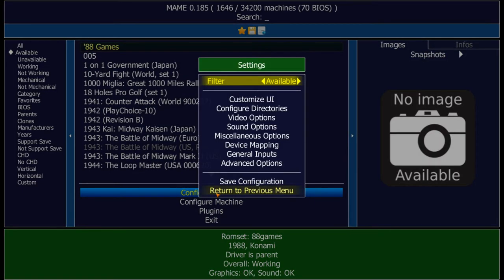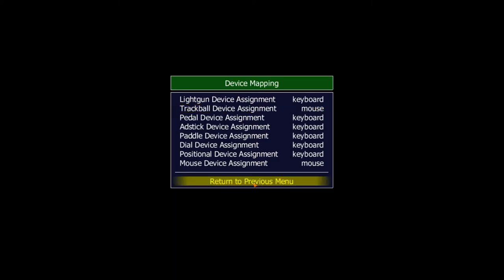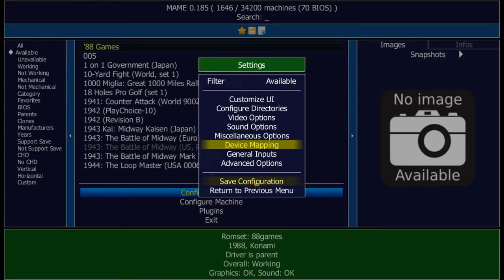Go to Configure Options and double-click on that, then Device Mapping — double-click. You can see here Trackball Device Assignment is set to Keyboard. I didn't have a trackball when I set this up, so I just left it stock. So you click it once to highlight it yellow, and I use the arrow key to switch it to Mouse. Then double-click Return to Previous Menu, then Save Configuration — double-click. Configuration saved.